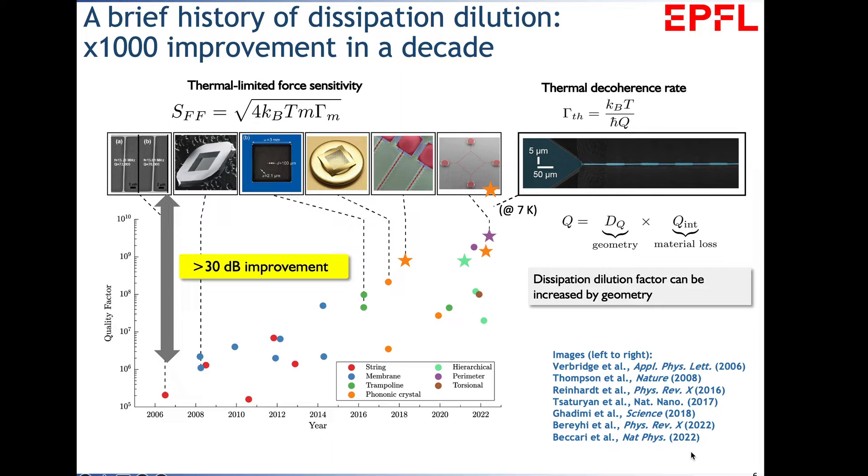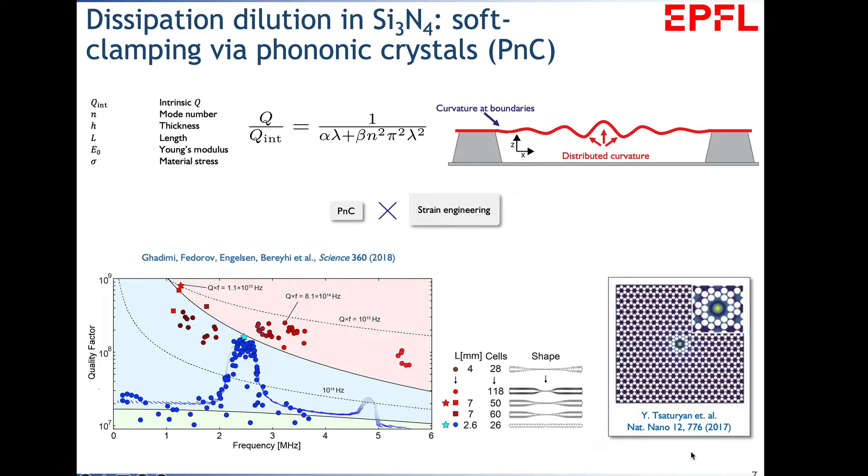The physics of loss dilution: you have strained material with intrinsic loss diluted by a geometrical factor that you can engineer by geometry or by engineering strain. This allows systems with very high thermal force sensitivity, and also very low thermal decoherence. The physics goes back to understanding dissipation in suspended test masses of LIGO. The same physics applies to strained silicon nitride resonators with intrinsic deposition stress.